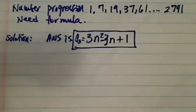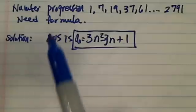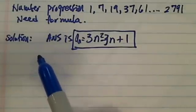The question here is looking for a formula for this number progression: 1, 7, 19, 37, 61, all the way to 2,791. The answer is 3n squared minus 3n plus 1. And how we get it, there are two ways to actually getting this.